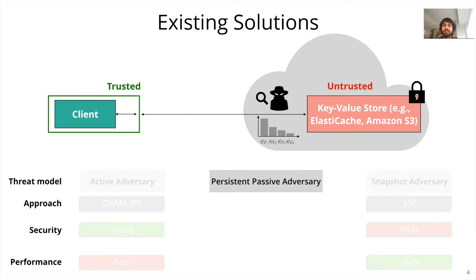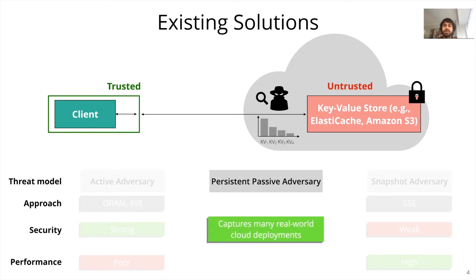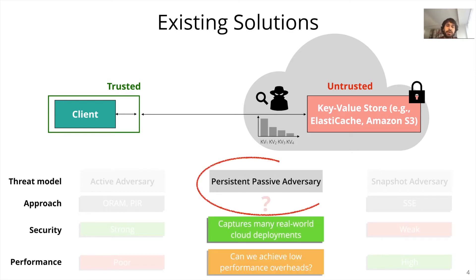In this work, we consider a persistent passive adversary for access pattern attacks, where the adversary can observe accesses to the data store but cannot inject or tamper with them. Prior works have shown this to be a realistic threat model for many cloud deployments. However, until now, it was unknown if bandwidth and storage efficient defenses for access pattern attacks are possible under the persistent passive adversarial model.